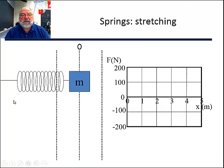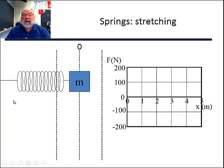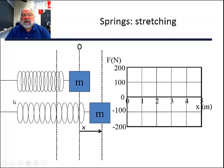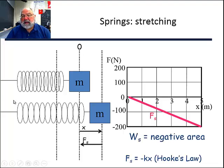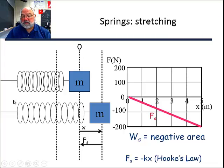Here's another graphic of the same sort of thing. We have a spring at equilibrium, and we stretch it a distance x. The spring is pulling back with a force F-sub-s, or spring force. According to Hooke's Law, the spring force equals negative k times x. And if you remember from the previous topic on variable forces, the area under the force-displacement curve is equal to the work. So the area of that triangle is negative one-half k x squared.